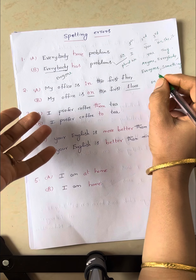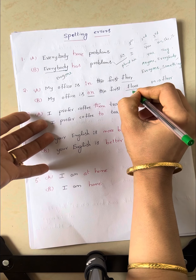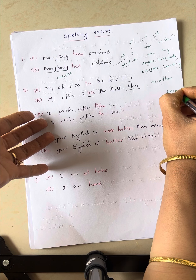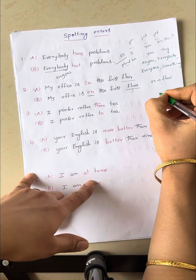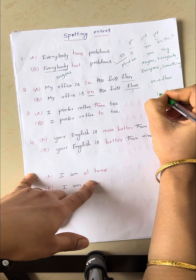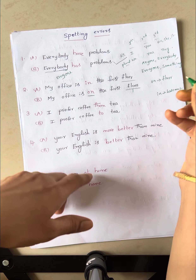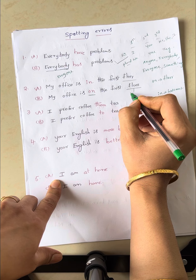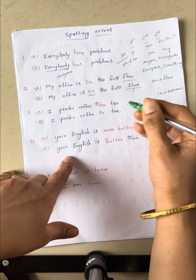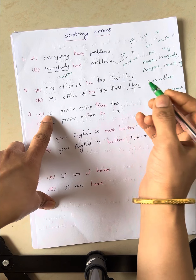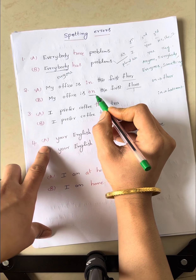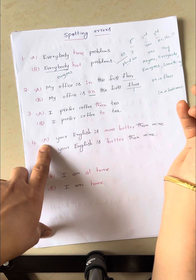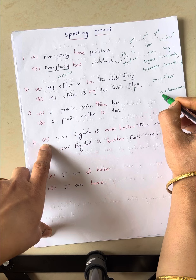Suppose if you see basement in the sentence, at that time you can use the preposition in. Means: my office is in the basement — that is the correct one. So for the floor's point of view, you use on. For the basement point of view, you use in.